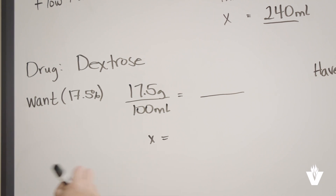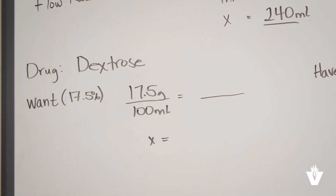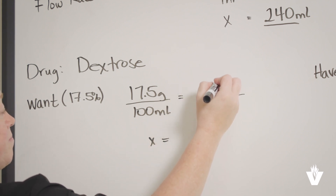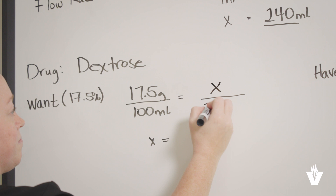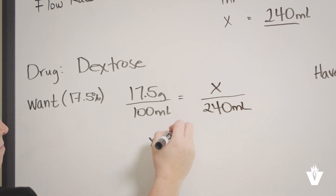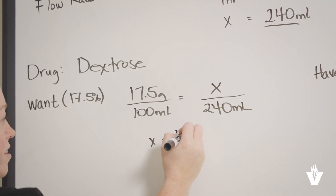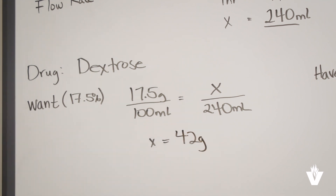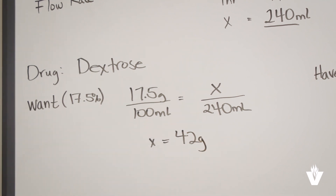To calculate the number of grams of dextrose 17.5% needed for the total volume based on the order, you would set up another ratio and proportion calculation. On the left side, you would have 17.5 grams over 100 milliliters. On the right side, you would have your unknown number of grams over 240 milliliters. Cross-multiply and divide to solve for X. X would equal 42 grams, which is the total amount of grams needed of dextrose 17.5%, but in stock we have dextrose 70%. We must now calculate how many milliliters of the 70% solution is required to get the required concentration.